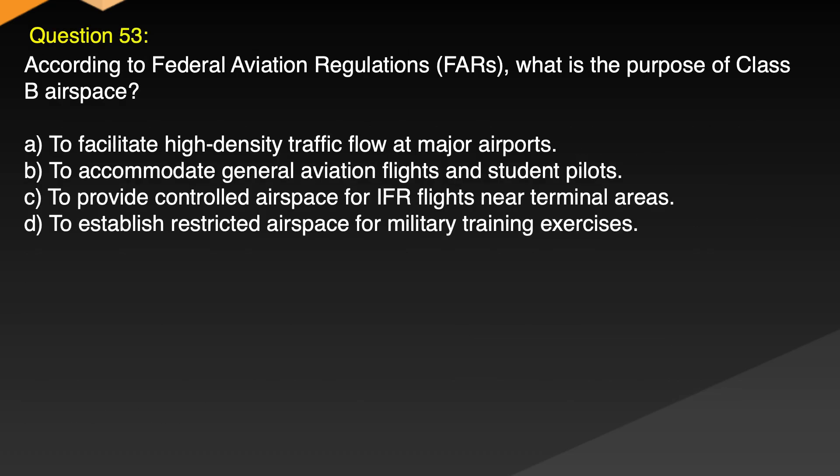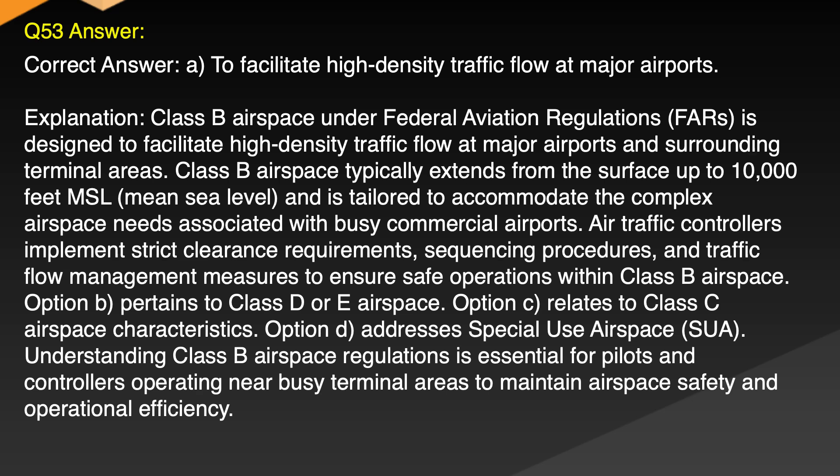Question 53. According to Federal Aviation Regulations, FARs, what is the purpose of Class B airspace? A. To facilitate high density traffic flow at major airports. B. To accommodate general aviation flights and student pilots. C. To provide controlled airspace for IFR flights near terminal areas. D. To establish restricted airspace for military training exercises. Correct answer: A. To facilitate high density traffic flow at major airports.